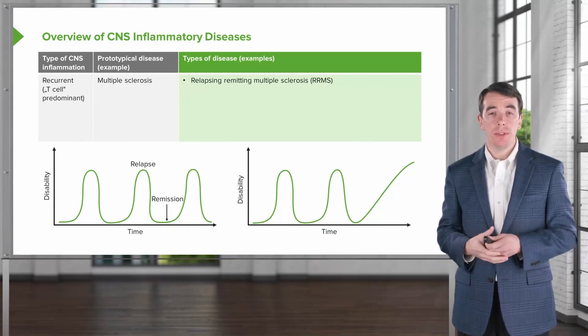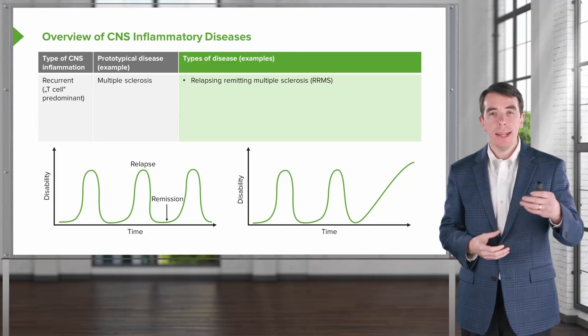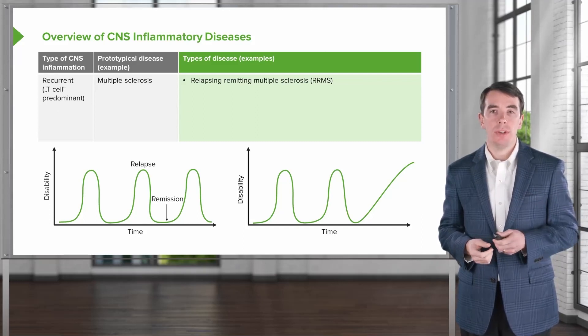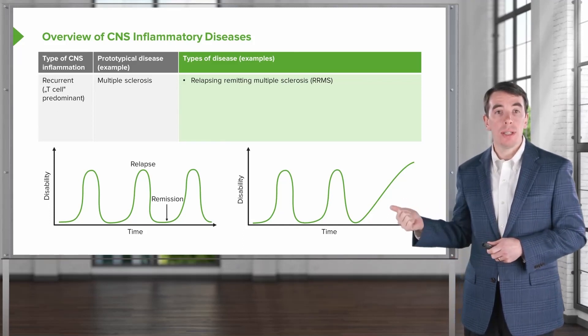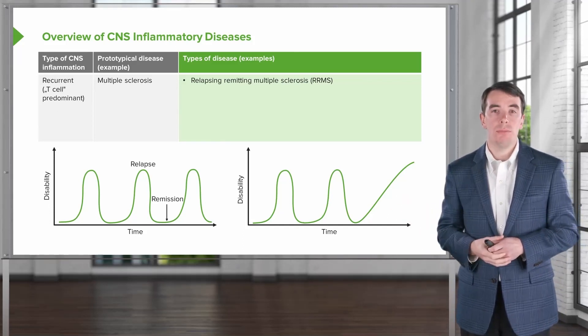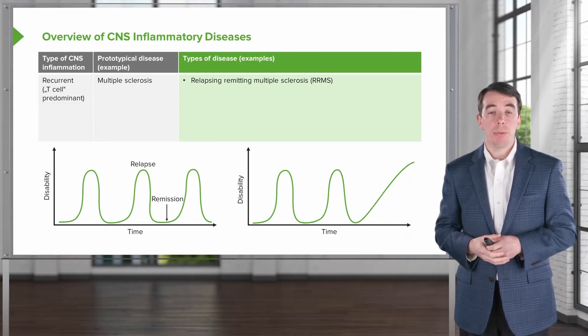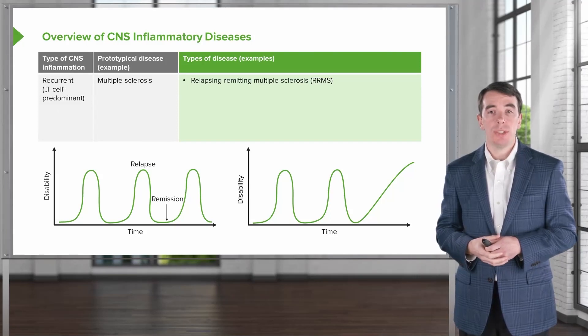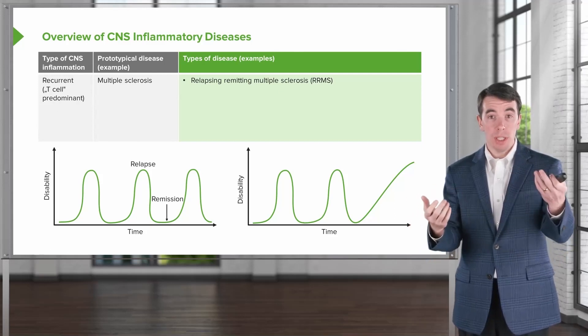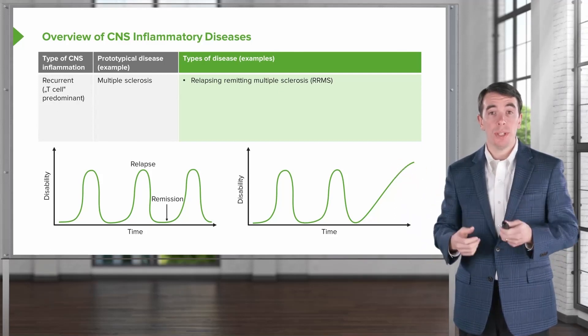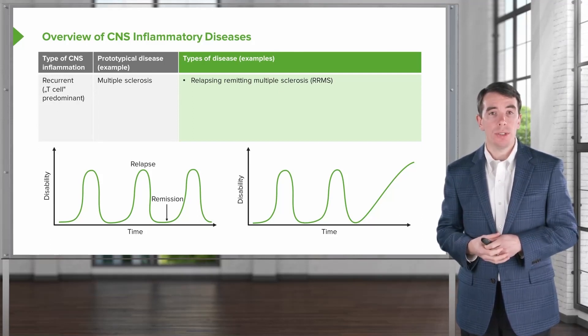Those monophasic conditions are different from the recurrent conditions. And we can categorize recurrent inflammation in the nervous system based on the predominant cell type that's involved. There are recurrent T-cell predominant syndromes, and this is where there is recurrent episodes of relapses and remissions. When the immune system is activated, there's always some degree of T-cells and B-cells and a lot of other things in between. But the primary cell type that's mediating this problem are T-cells.